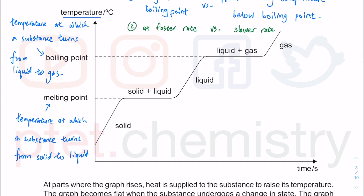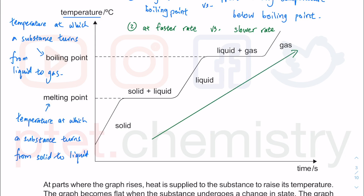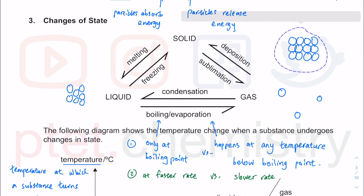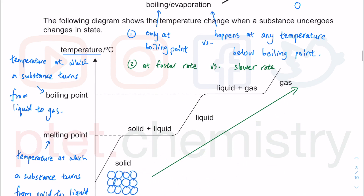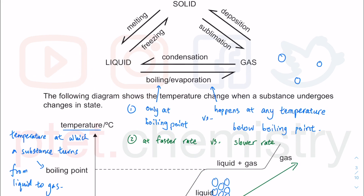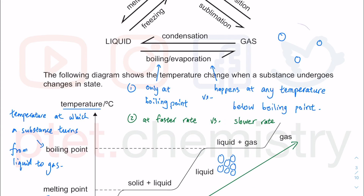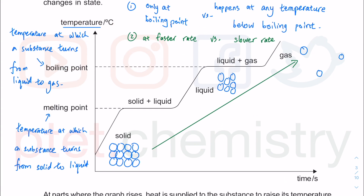Notice a few important features in this graph. Think about what happens going from solid to liquid to gas. In terms of the particles — kinetic particle theory — what happens to the particles? You can see the particles get further apart, and they become disorderly. They go from an ordered arrangement in the solid state to a disordered arrangement. Disorder means they are free to move, whereas in a solid you can only vibrate about fixed positions.